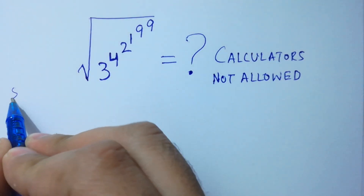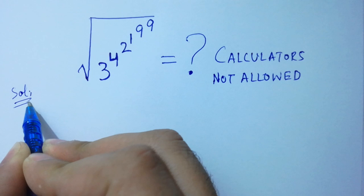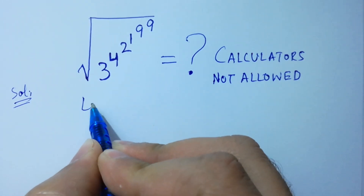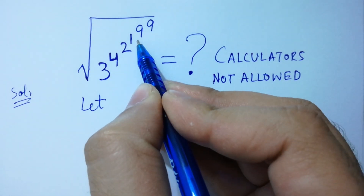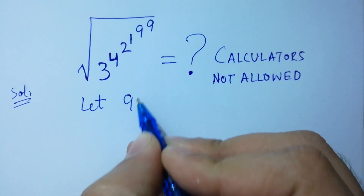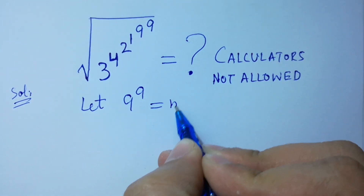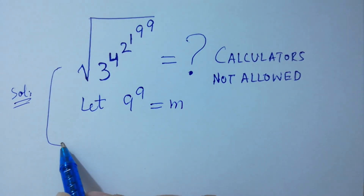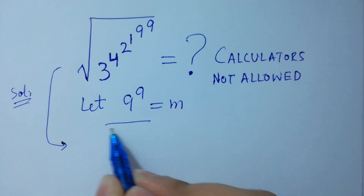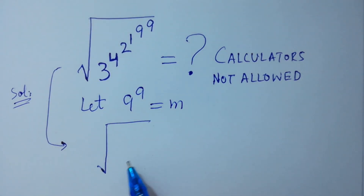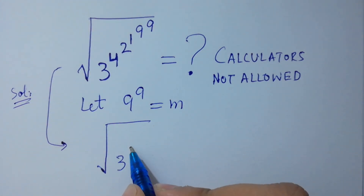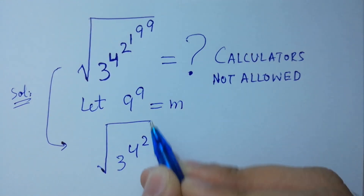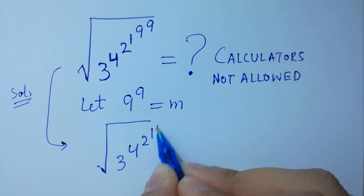Let us find a solution. Let 9 to the power 9 equal to m. Then we have the square root of 3 to the power 4 to the power 2 to the power 1 and 9 to the power 9, which becomes to the power m.